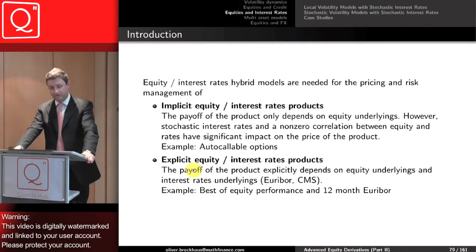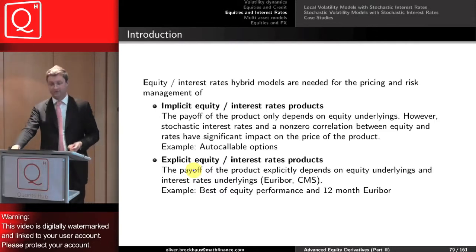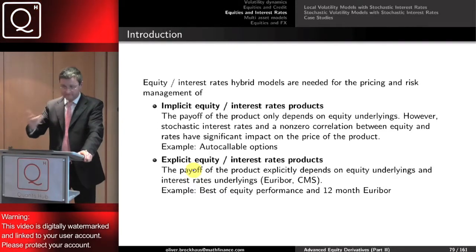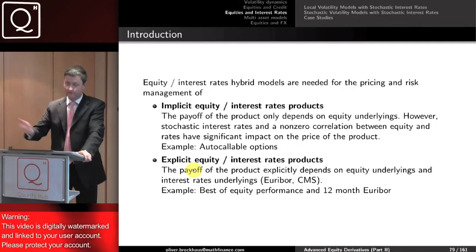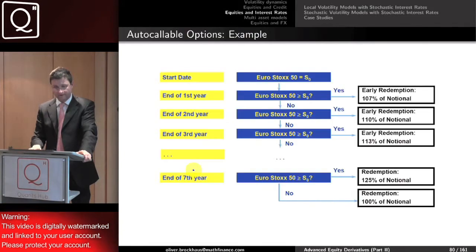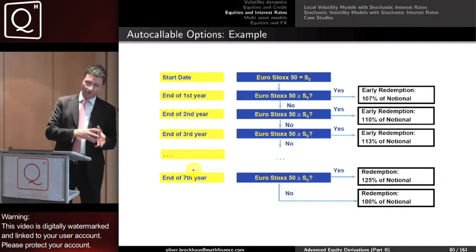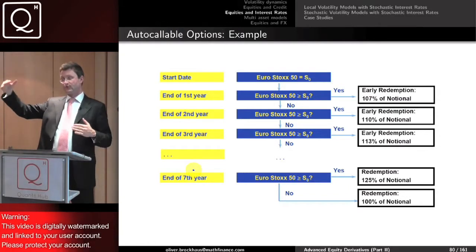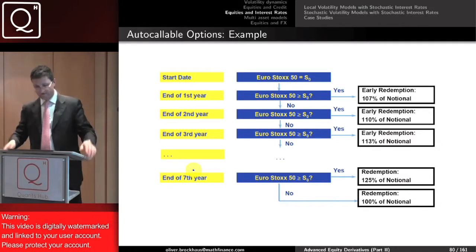These products are going to have a decent impact from the correlation between interest rates and equity. Another example is explicit equity interest rate products — for instance, a payoff that depends explicitly on the equity underlying, such as the best of equity performance and some LIBOR rate. Going back to the autocallable, one can also look at this in the context of dividends. Proportional versus cash dividends are going to have an impact because you're conditioning your spot to go up, and whether your dividend is high or low will affect the price of the autocallable.